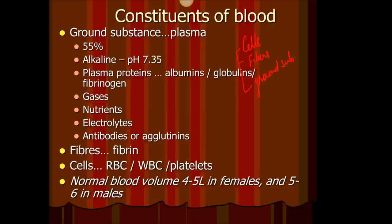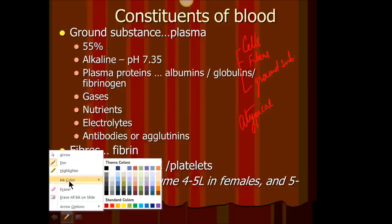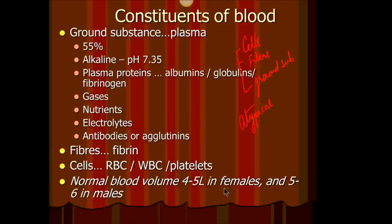Blood is called an atypical type of connective tissue. The reason is that you have cells in blood — white blood cells and platelets. There is ground substance present in blood, which is the plasma. If you took all the cells out, especially the red blood cells, what is left behind — the fluid in which all these cells are suspended — is straw-colored, and that's called plasma.